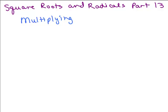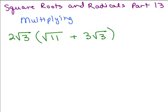This is part 13 of square roots and radicals and we're going to do some problems where we are multiplying. We might be using a distributive property or you might have a binomial. So let's look at an example: 2 square roots of 3 times the quantity square root of 11 plus 3 square roots of 3. This would be a problem where you would use the distributive property.